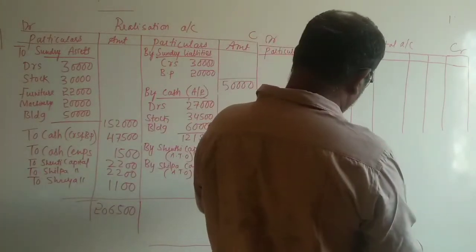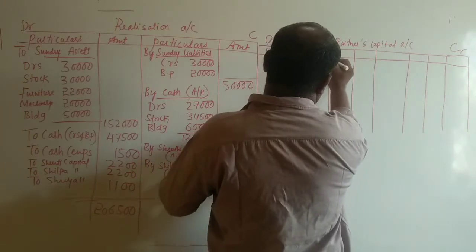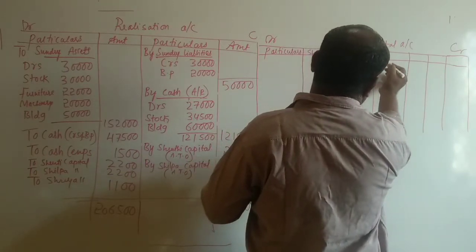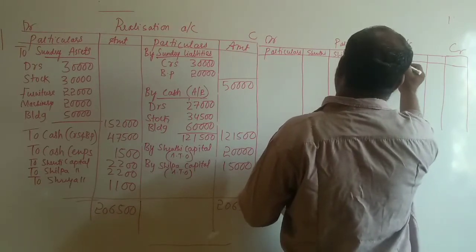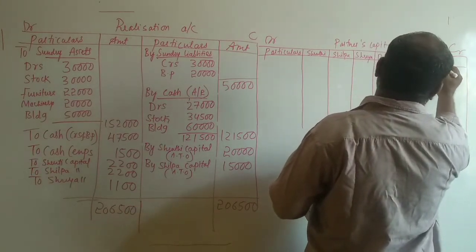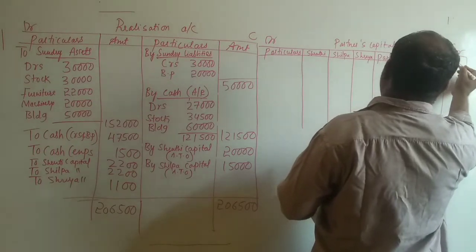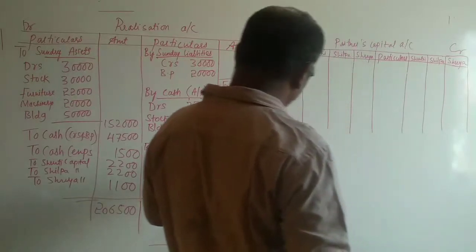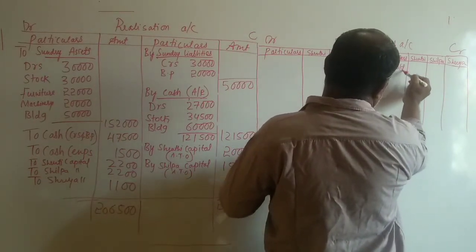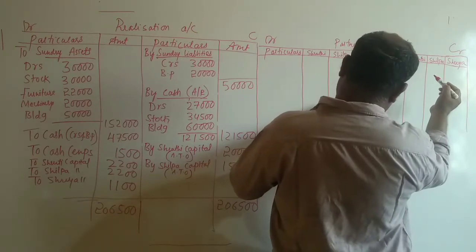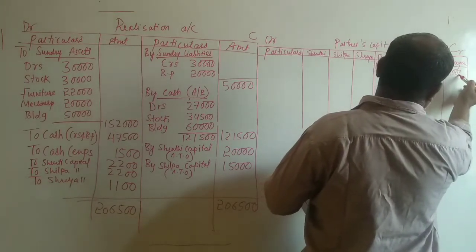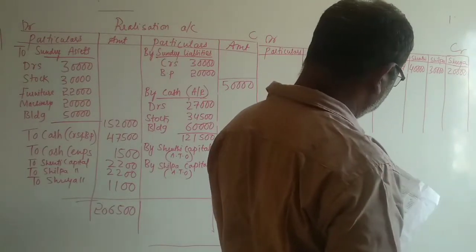Now we are supposed to prepare the partners' capital account. There are three partners: Shruti, Shilpa, and Shreya. First is by balance brought down: 40,000 for Shruti, 30,000 for Shilpa, and 20,000 for Shreya. These are the capital balances from the partners' accounts. The general reserve is divided in the ratio 2:2:1, giving 4,000, 4,000, and 2,000 respectively.